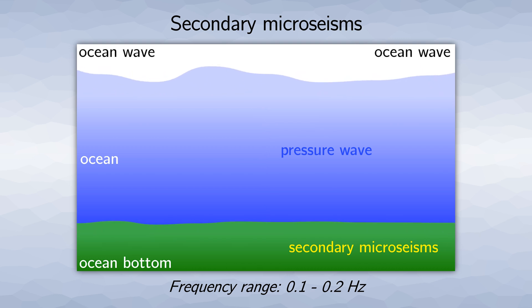Since the source strength depends on the wave height, the distribution of noise sources changes constantly, particularly if there are storms. We can observe these secondary microseisms by looking at seismic noise data in a frequency range between 0.1 and 0.2 Hertz.